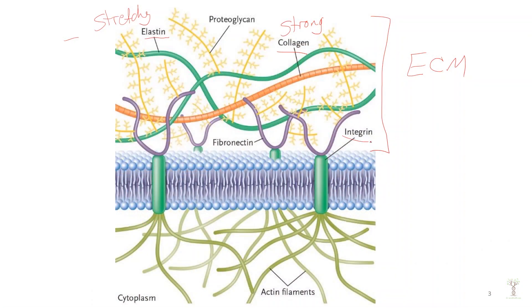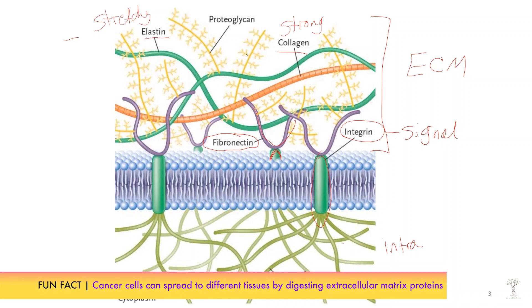Integrins are proteins that span the membrane and are really important for connecting the outside of the cell with the inside of the cell. Their main role is in signaling, allowing cells to communicate with each other so that they can function together as a tissue. Fibronectin is a connecting protein that links the integrin proteins with the other proteins in the extracellular matrix.